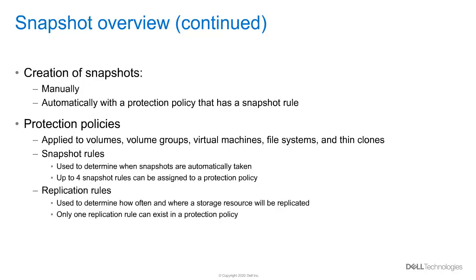Protection policies are the data protection engine in PowerStore. They can be applied to many different types of storage objects such as volumes, volume groups, virtual machines, file systems, and thin clones. Protection policies can be made up of two different types of rules: either a snapshot rule or a replication rule. The snapshot rule is used to determine when a snapshot will be automatically taken. You can add up to four different snapshot rules to a protection policy.